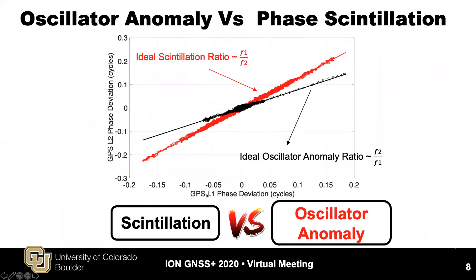Here is the scatter plot of L1 phase deviation versus L2 phase deviation. Given that oscillator anomaly is proportional to carrier frequency, a scatter plot of oscillator anomaly should lie on the black line, while for scintillation it should follow the red line. The oscillator anomaly example plotted in black circles follows the black line, while the scintillation example in red crosses follows the red line. As a result, we can use phase measurements from two frequency bands and do a linear fit to find the slope, which we call the ratio, to distinguish between scintillation and oscillator anomaly.